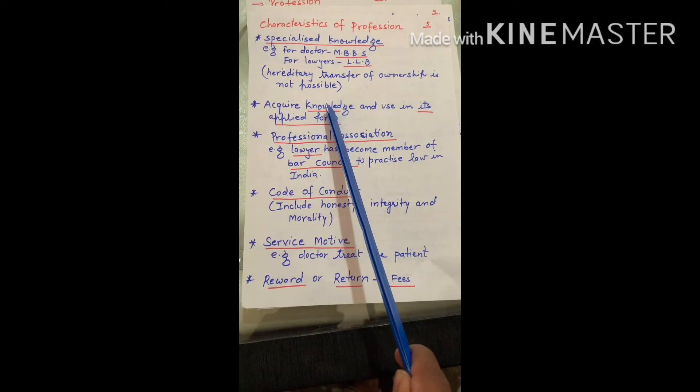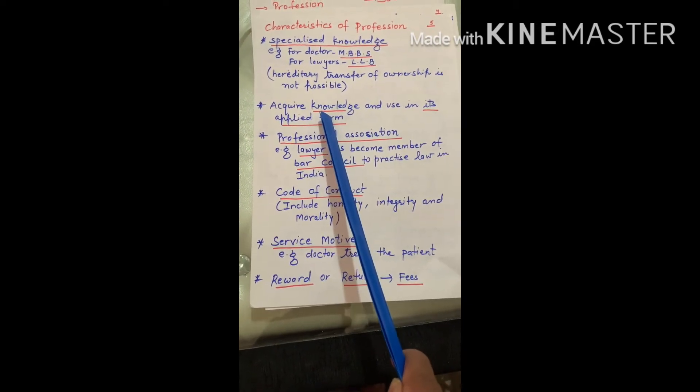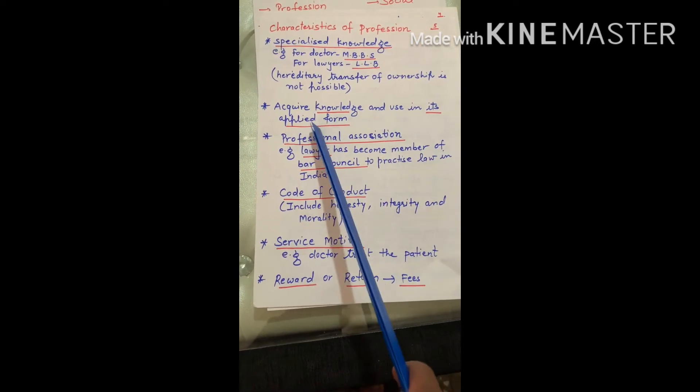Second is acquire knowledge and use in its applied form. If we acquire special knowledge, we need to be able to implement it.